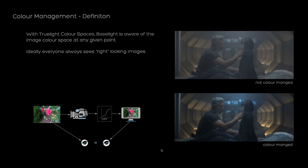One of the main differences when working color managed is the starting point of your grade. Typically the image should look like how you would perceive the same scene with your own eyes on set — not washed out. This works because the software is aware of the input color space fed into the color grading, and aware of the display's capabilities and expected color space, resulting in a similar perception between the set and the display.